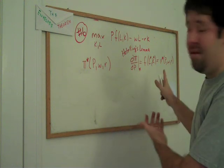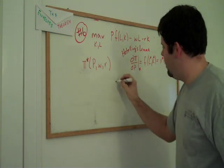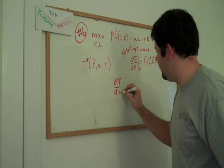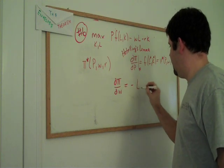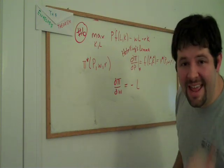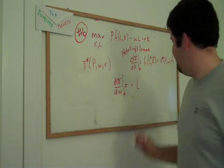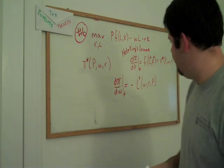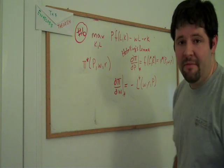And there are other envelope theorem results in here. We could also take the derivative of the profit function with respect to the wage. That will give us negative L. Ah, but that's not just any negative L. Well, we plug it, we evaluate at the optimal our unconditional factor demands.